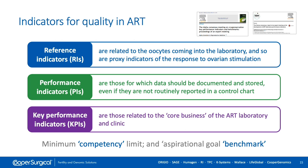The Alpha and Vienna Consensus identified three categories of indicators: reference indicators, performance indicators, and key performance indicators. Reference indicators relate to oocytes coming into the lab — proxy indicators of ovarian stimulation response. Performance indicators are data recorded and stored but not routinely used in a control chart. Key performance indicators relate to the core business of the ART laboratory and clinic. The consensus also defined a competency limit — the minimal threshold to deliver good quality — and an aspirational benchmark goal.